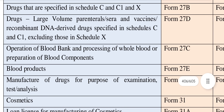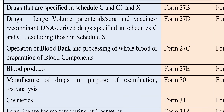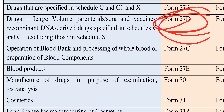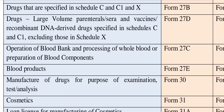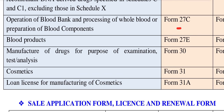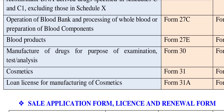Next we have DNA technology — this is recombinant DNA. This is a special product: vaccines, sera, recombinant DNA products. This is a special product — very easy. This is the operation of blood bank and processing of blood and preparation of blood components. Let's go to the blood bank — blood collection. That is the camp C.